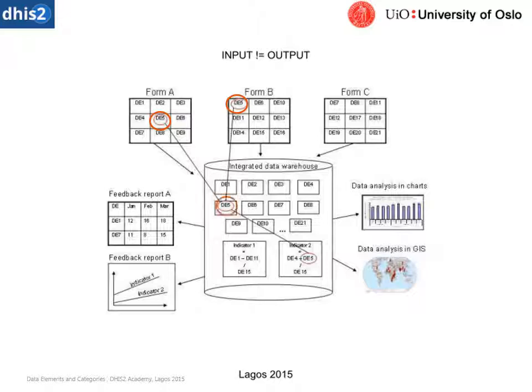Once we enter those values, they go into the data warehouse in DHIS 2 and are stored as data element 5. We then use data element 5 as part of an indicator — in this case, data element 4 plus data element 5 divided by data element 15 — giving us indicator 2. This clearly demonstrates the relationship between a data element and an indicator, and how they are different yet related.